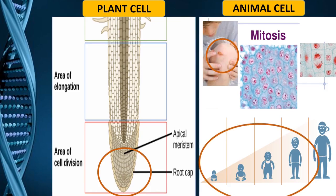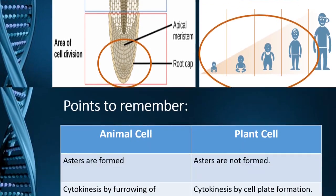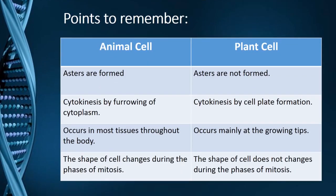However, in an animal cell mitosis occurs at different areas for different reasons. For example, when we get hurt and blood comes out, mitosis takes place at that area and the wound gets filled up. It also takes place in the growth regions and during the growing age of a body, so mitosis in an animal cell plays many more roles.